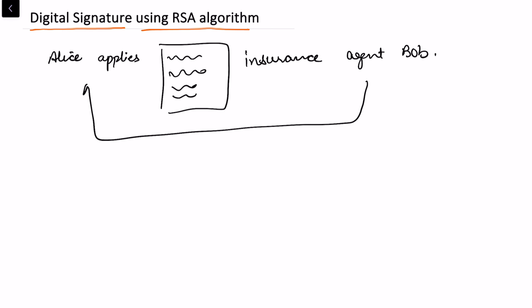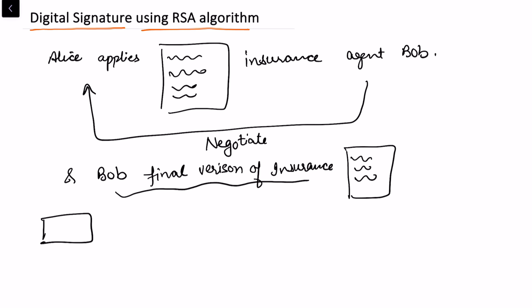Bob makes a final version of the insurance document. Now there are two ways: either Bob sends this document to Alice by post, but this will take cost and involves a lot of time. Or it can be sent through digital message, that is email. Bob wants to send this final document to Alice by email, and it will save cost and time.